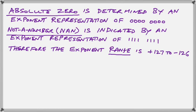Our usable exponent range, once we remove those two combinations, stretches from 1 to 254. And because we're using excess-127 format, it gives us a range of positive 127 to negative 126.